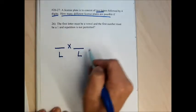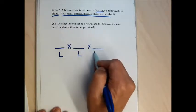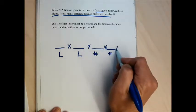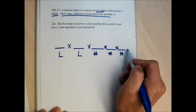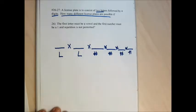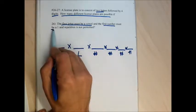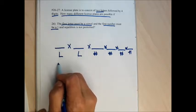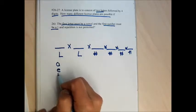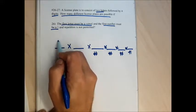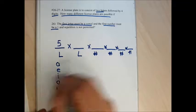Problem 26 asks how many license plates are possible with two letters followed by four digits. I set up slots for the first letter, second letter, and four number positions. The first letter must be a vowel, so it can be A, E, I, O, or U — five choices. The first number must be a 1 — only one choice.